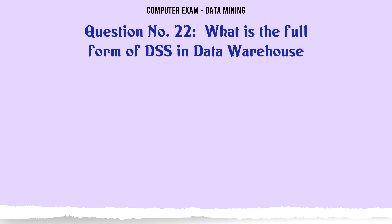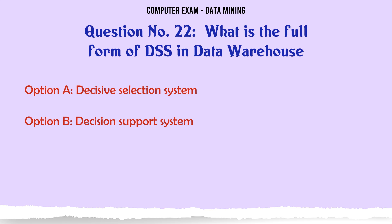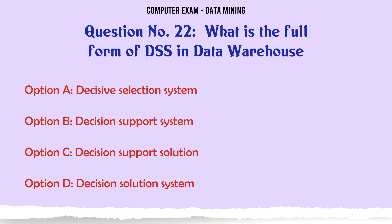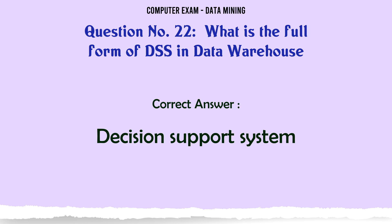What is the full form of DSS in data warehouse? A. Decisive Selection System. B. Decision Support System. C. Decision Support Solution. D. Decision Solution System. The correct answer is Decision Support System.